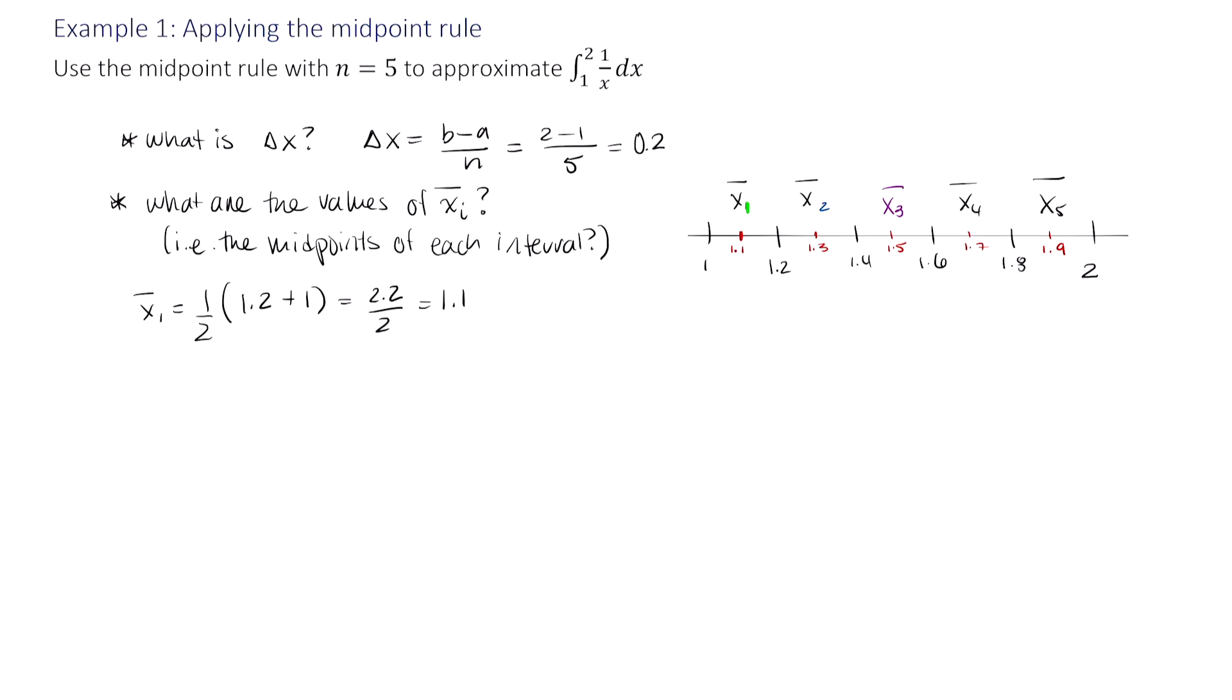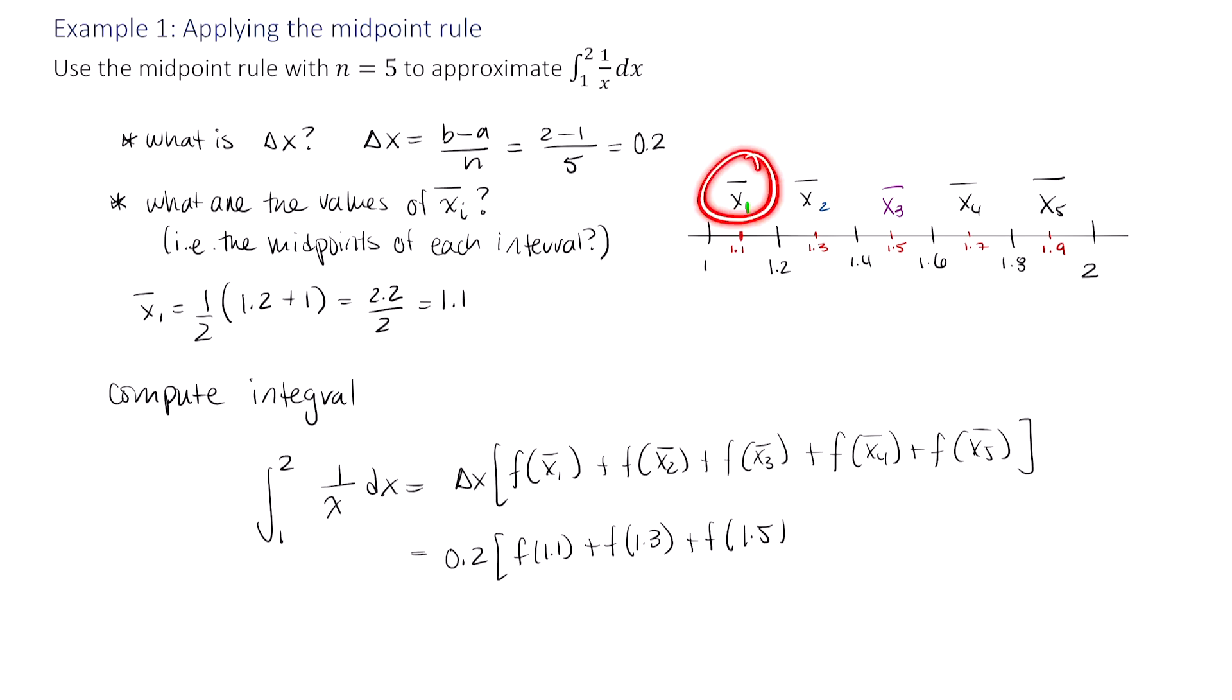So now let's compute our integral. We have the integral from 1 to 2 of 1 over x dx is equal to delta x times f(x₁ bar) plus f(x₂ bar) plus f(x₃ bar) plus f(x₄ bar) plus f(x₅ bar). So this is 0.2 times f(1.1) plus f(1.3) plus f(1.5). If you notice, I'm just taking these values that I found for the midpoints and plugging them in. So x₂ is equal to 1.3, so that goes in here. And so go ahead and do that for all of these.